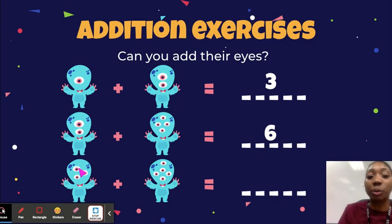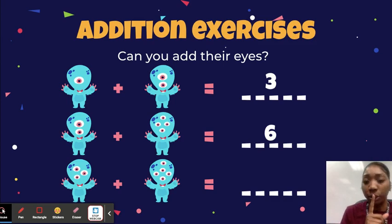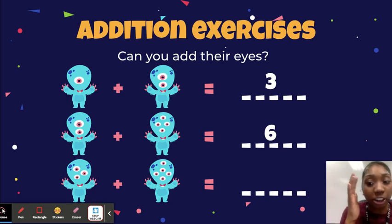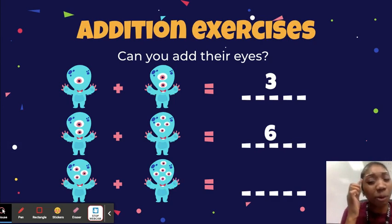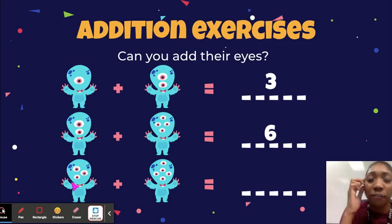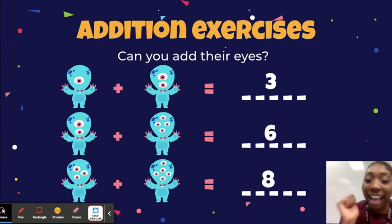Now let's try the last one: three eyes plus five eyes. A strategy you can use when adding is to put the bigger number in your head and count up with the other number. So I'll put five in my head: five, six, seven, eight. Five plus three is eight — there are eight eyes altogether. Excellent job.